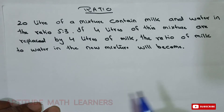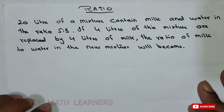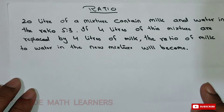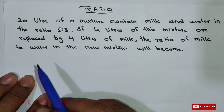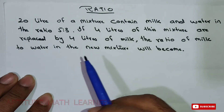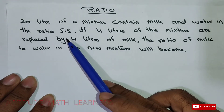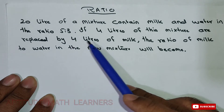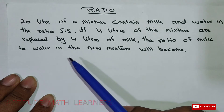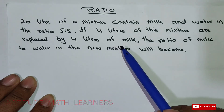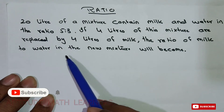Hello and welcome to our YouTube channel Aptitude Math Learner. Today we have another interesting question: 20 litres of a mixture contain milk and water in the ratio 5:3. If 4 litres of this mixture are replaced by 4 litres of milk, what will the ratio of milk to water in the new mixture become?